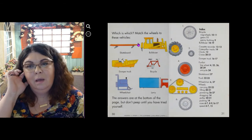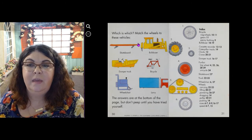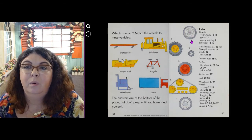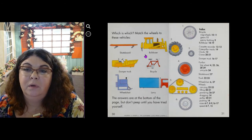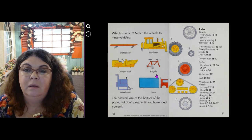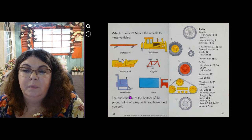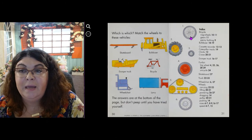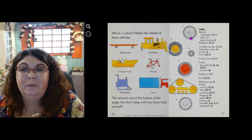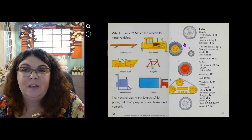Which one is which? Match the wheels to these vehicles. Can you match? Let's look at number one. What does that go to? The skateboard? The bulldozer? The dumper truck? The bicycle? The wheelchair? Or Lori? Yes! That's a bicycle wheel! Yes, very good.